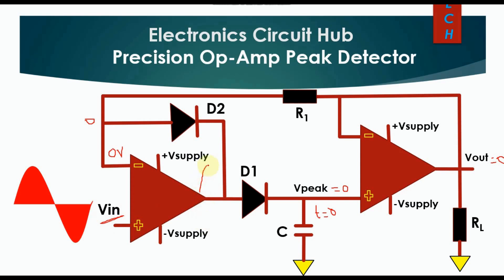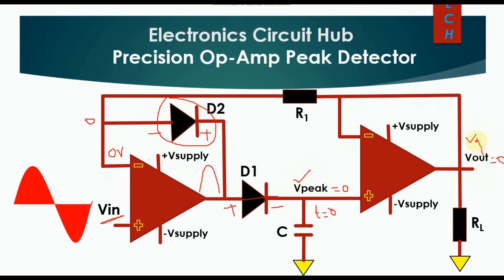Here you get a positive output; diode D1 has plus at anode and minus at cathode, so D1 conducts and behaves like a short circuit. Diode D2 does not conduct and behaves like an open circuit. Now the capacitor charges to V-peak value, and that same voltage appears at V-peak and also at V-out.